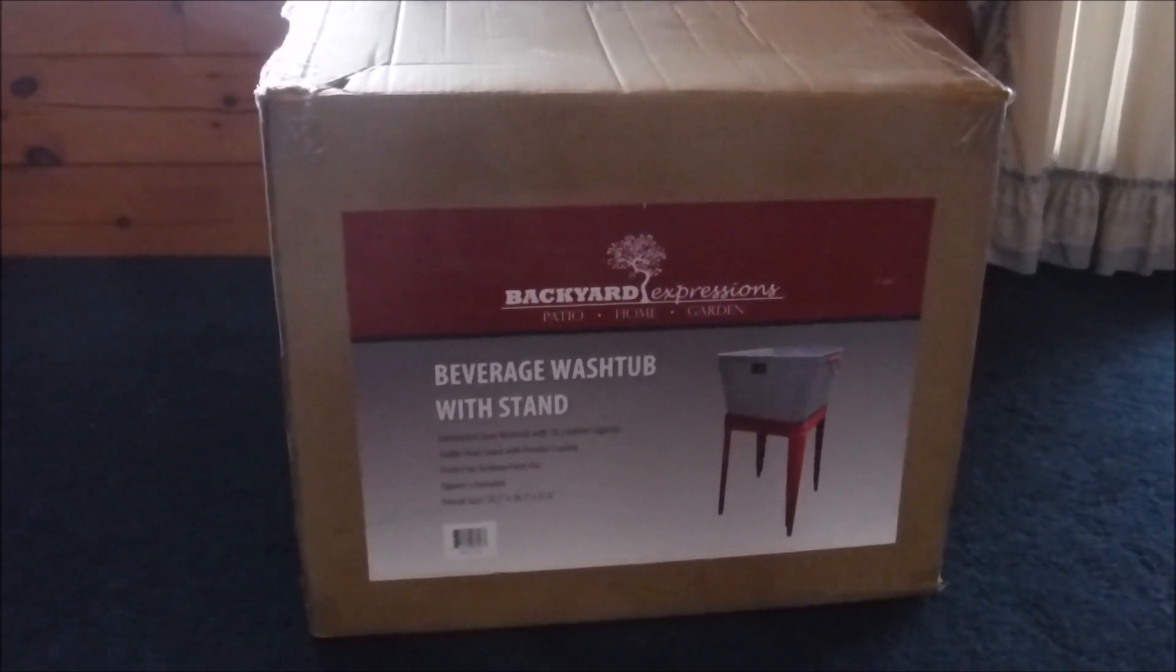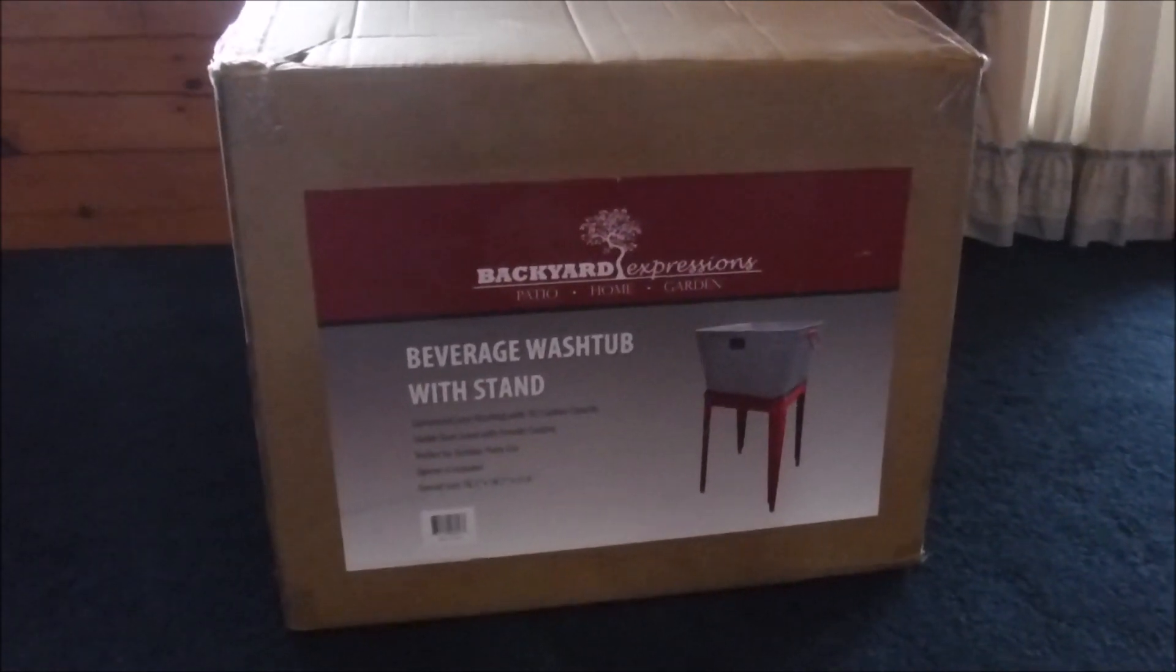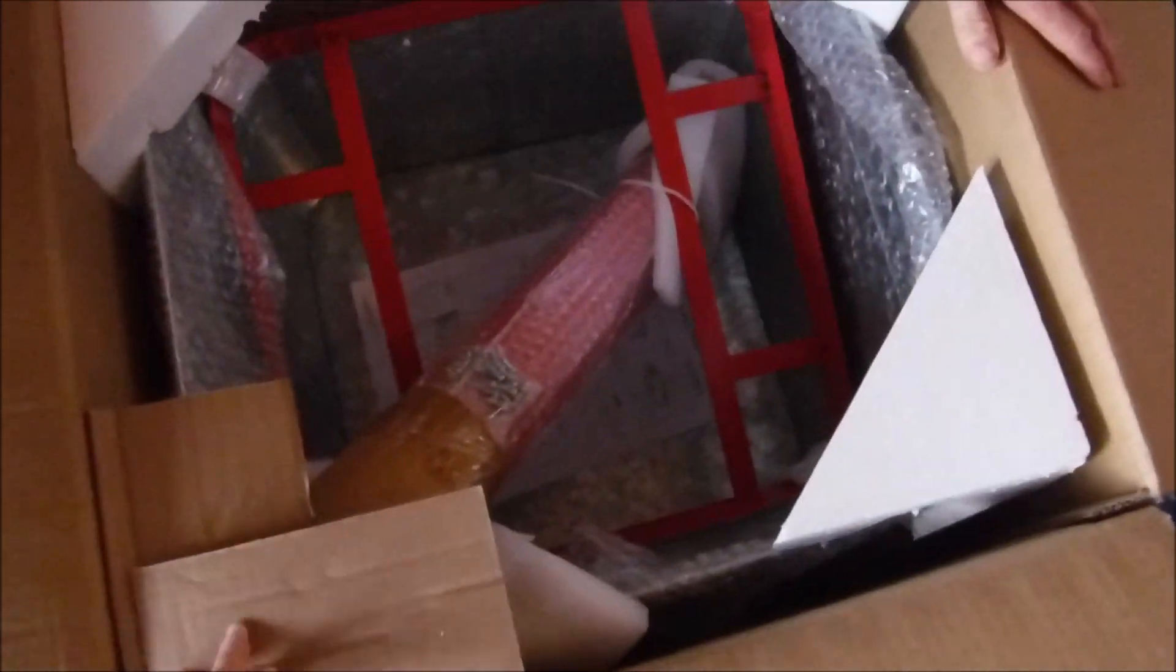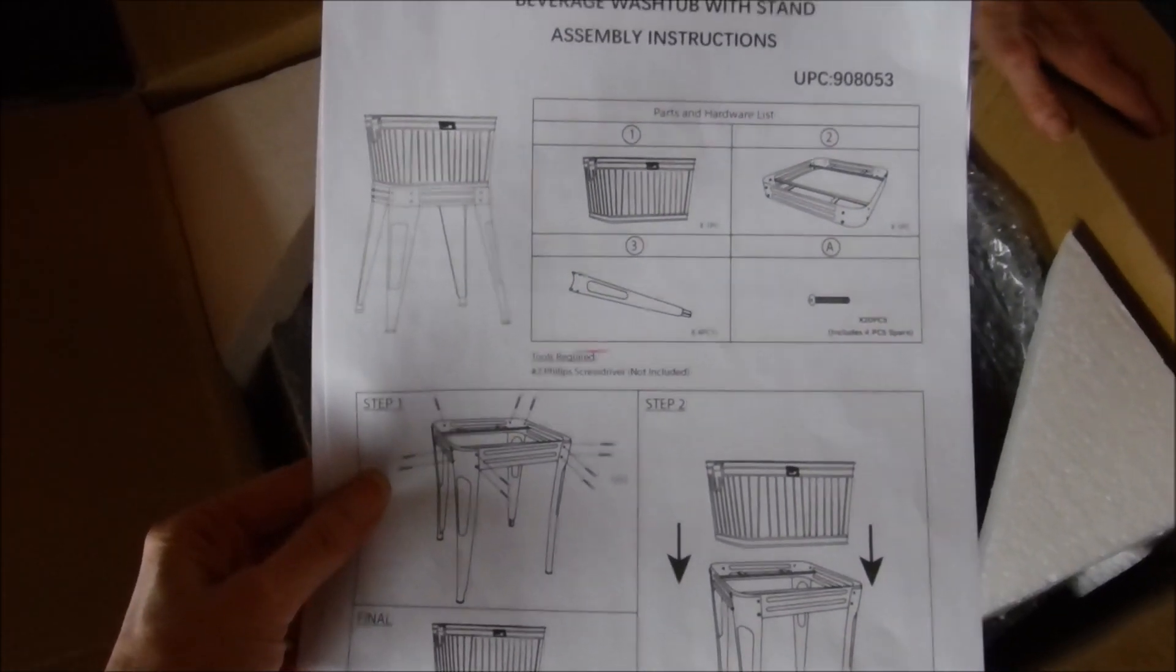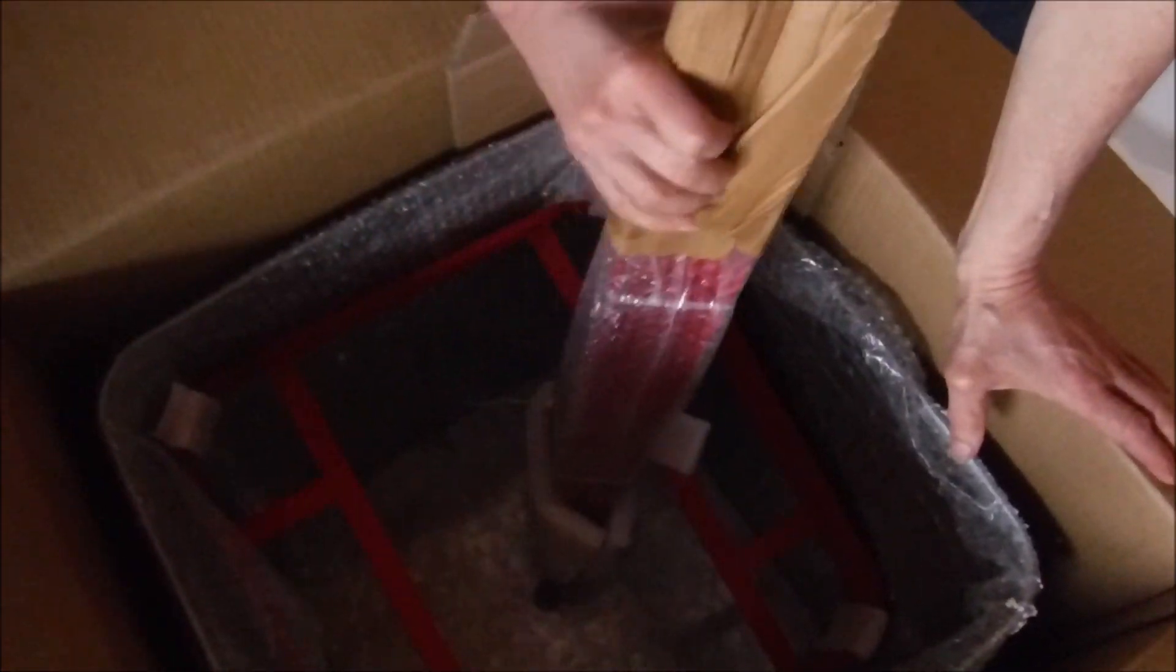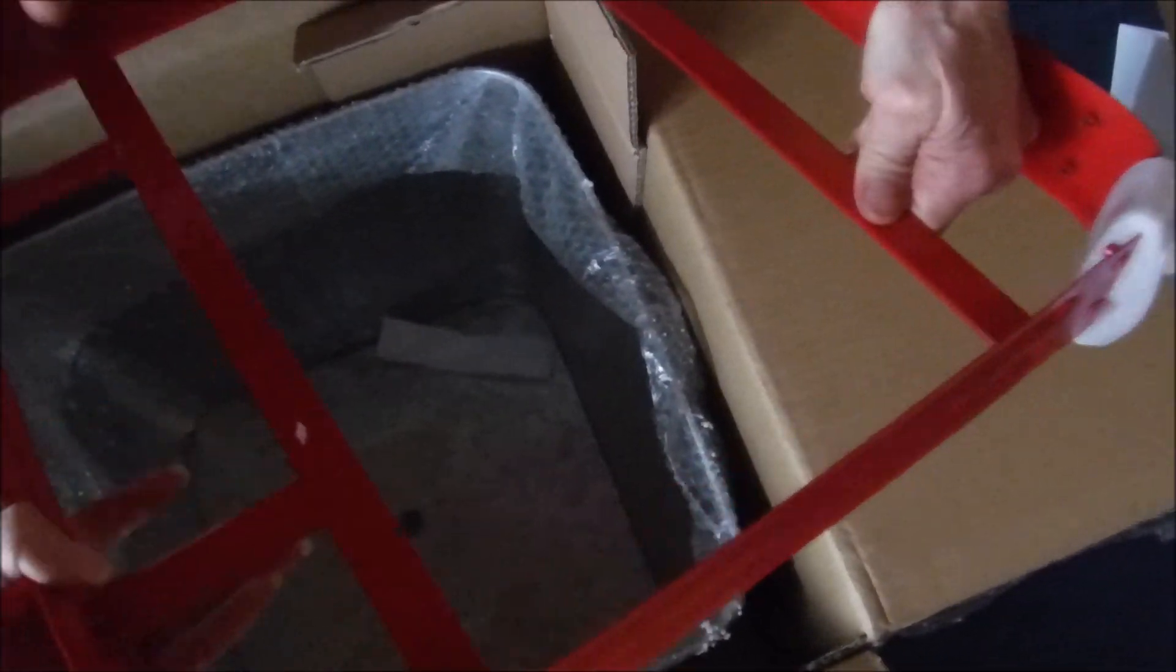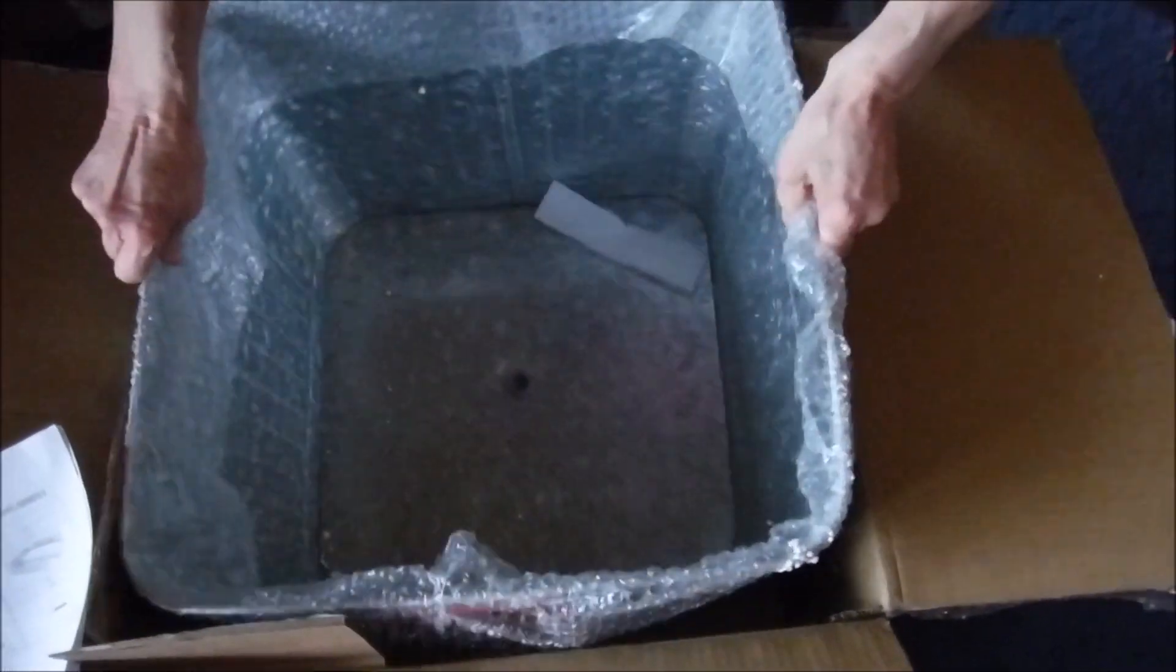I'm going to get this opened up here and get it put together. So here's how it came packaged. Let's get our directions out here. We're going to need a number two Phillips screwdriver to put this together. So we're going to start getting this out here. I'm going to need scissors to cut that. So that's the stand. That's the stand that sits on there. And that's the washtub there.